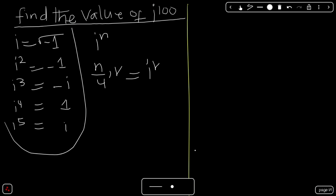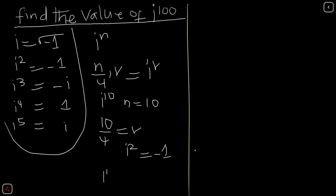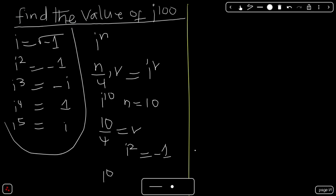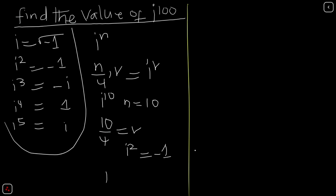Let's take an example. Find i raised to the power of 10. The value of n here is 10, so we divide n by 4, which is 10 divided by 4. We have a remainder of 2, so the answer becomes i raised to the power of 2. We already know that i squared is equal to negative 1. Therefore, i raised to the power of 10 is equal to negative 1.